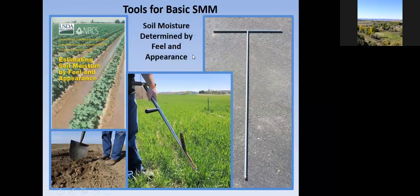Tools for basic soil moisture monitoring include the NRCS handbook called 'Estimating Soil Moisture by Feel and Appearance' — it is a must-have. You can get it online or from your NRCS office. It shows you how to texture your soil and determine your soil water content based off of that texturing.